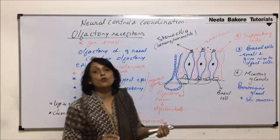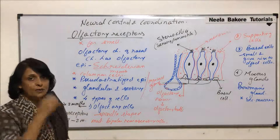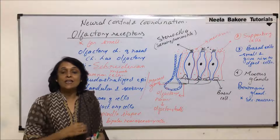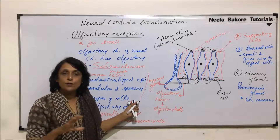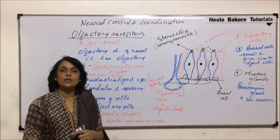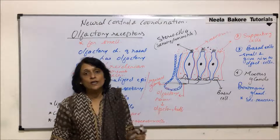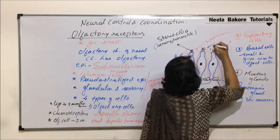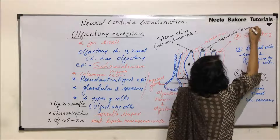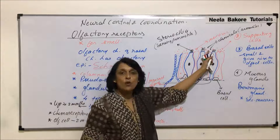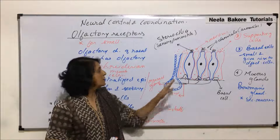In humans there are about two million olfactory cells. This number is much higher in animals like dogs, who can differentiate between body odors and even identify a person from their smell. Humans can also distinguish hundreds of different smells, but the olfactory perception in dogs is much better than in humans. The working mechanism is straightforward — chemicals with smell dissolve in the mucus and stimulate the stereocilia.